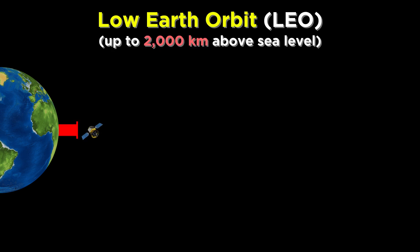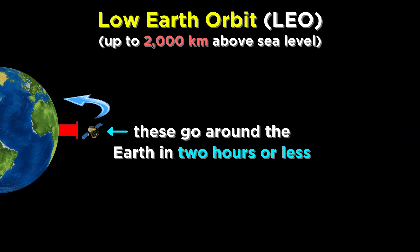There is low Earth orbit. This means around 2,000 kilometers above the surface. Objects here go around the Earth very fast, in about two hours or a little less.